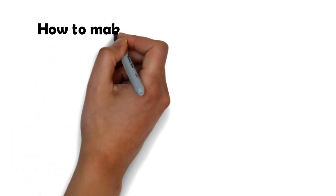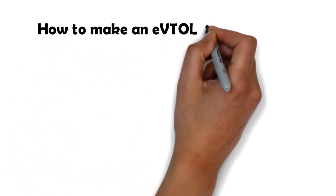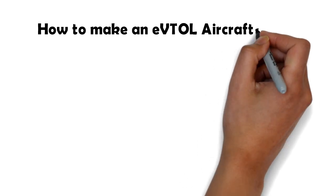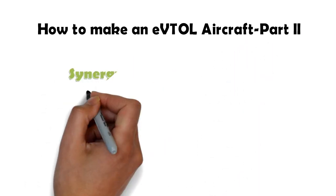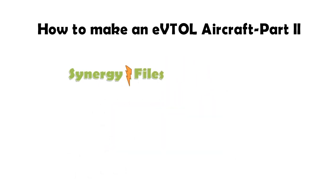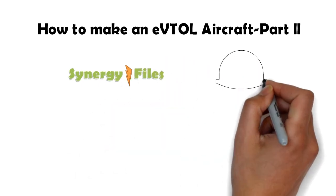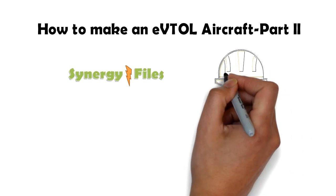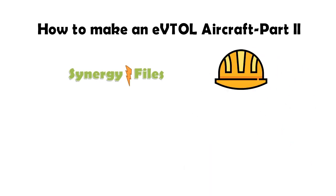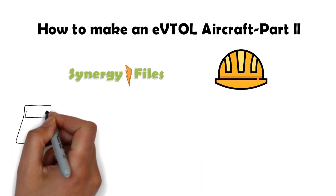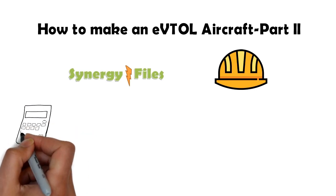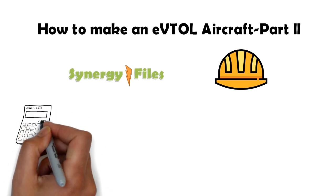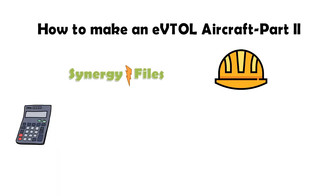Hi, welcome to this video which is the second part of a three-part video series where we explore how to make an eVTOL aircraft. On this channel, Synergy Files, we aim to inspire budding engineers and technicians for a better, more sustainable world. Subscribe to the channel to get more such videos. In part one we looked at some of the design principles. In part two we will look at simple calculations that will serve as guidance for setting up design parameters and selecting components.